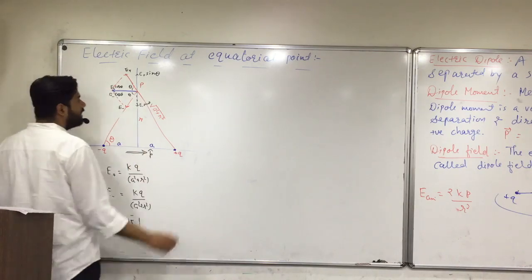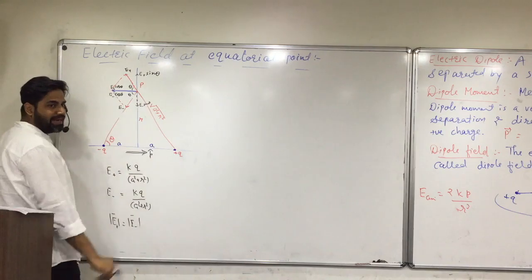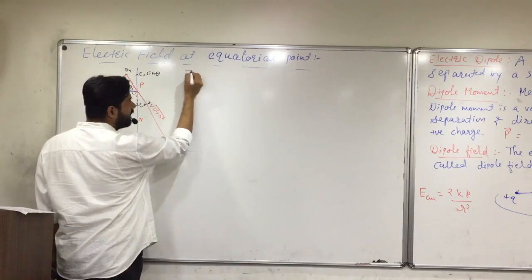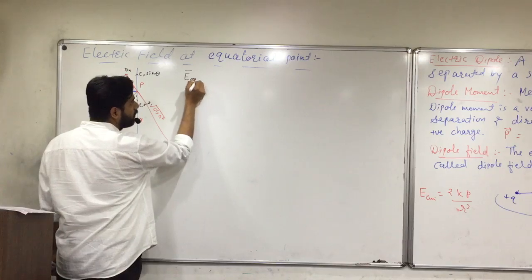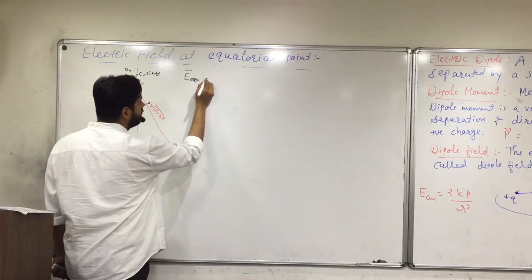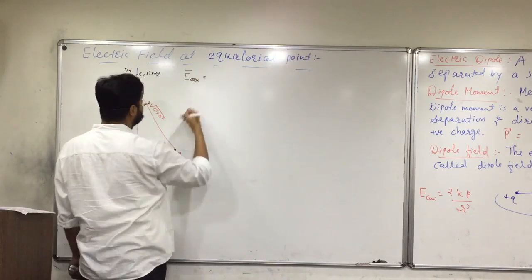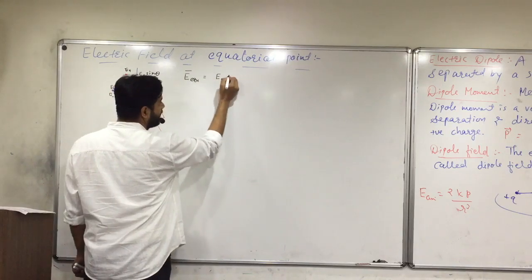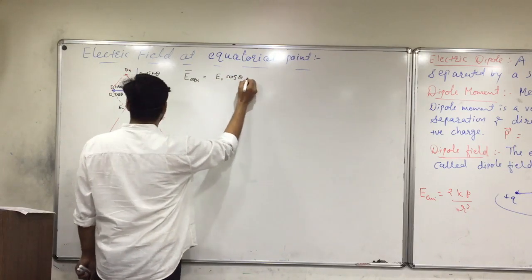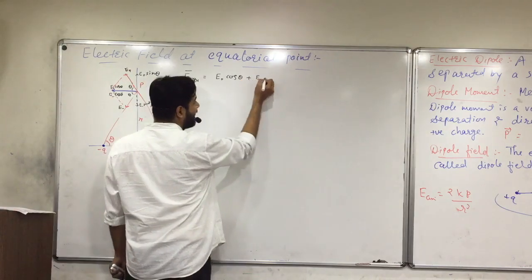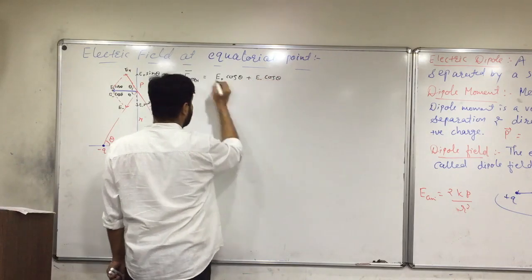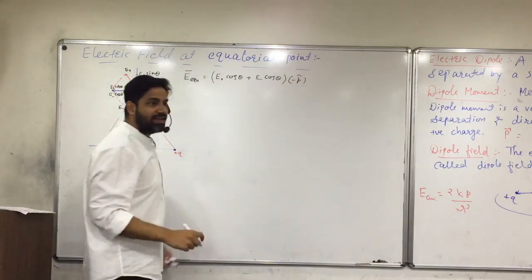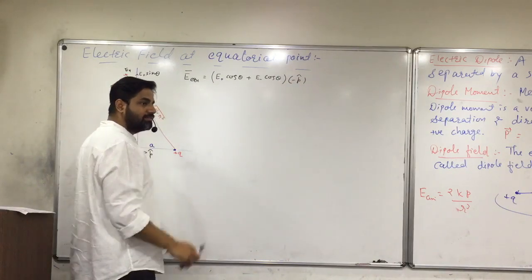The dipole direction is in this direction — this is my p-hat. So we can say its direction is minus p-hat direction. Therefore, the net electric field E equatorial equals (E positive cos theta plus E negative cos theta) into minus p-hat.